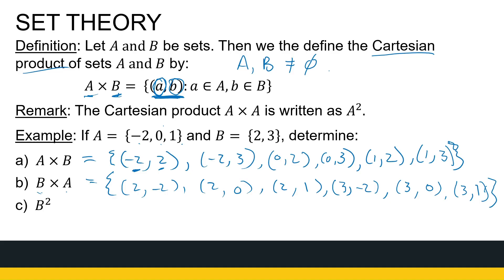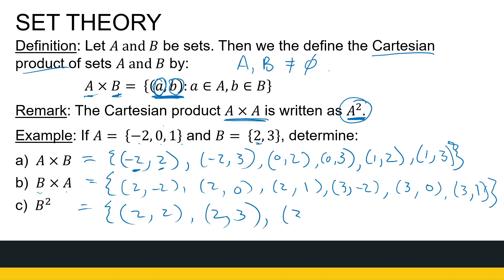If we say B squared, we mean the Cartesian product of B with itself. The first entry comes from B and the second entry comes from B. So matching B's entries with each other: (2, 2), (2, 3), (3, 2), (3, 3). That is the Cartesian product of two sets.